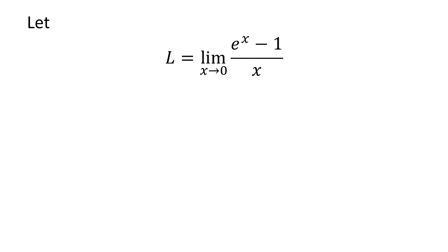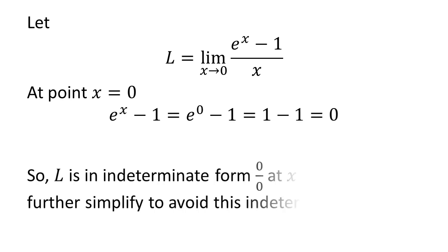Let us assume L is the limit of e^x minus 1 over x as x approaches 0. At x equals 0, e^x minus 1 equals 0. So we can see that the limit L is in indeterminate form 0/0. Let us try to further simplify the limit to avoid this indeterminate form.